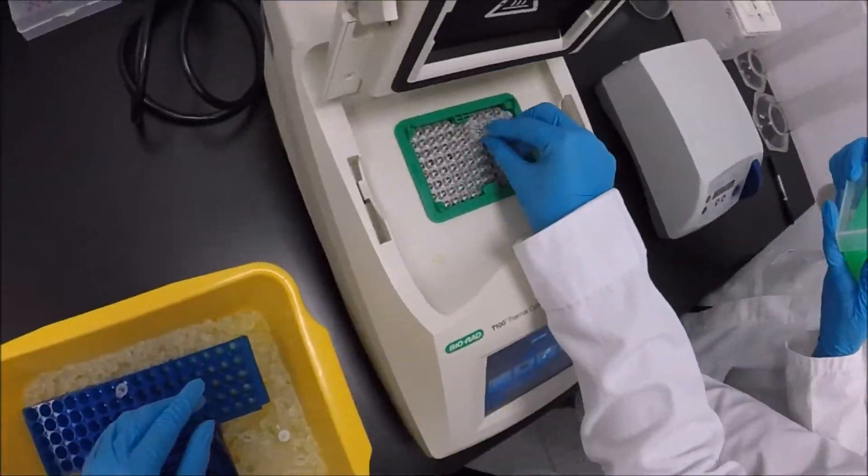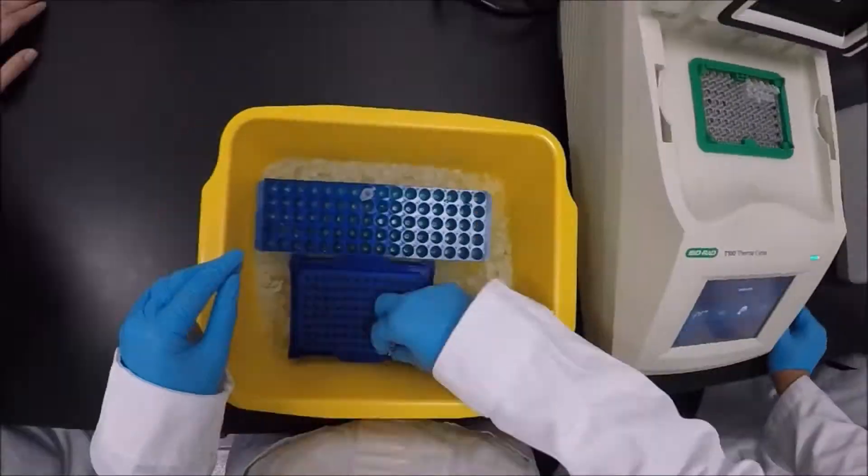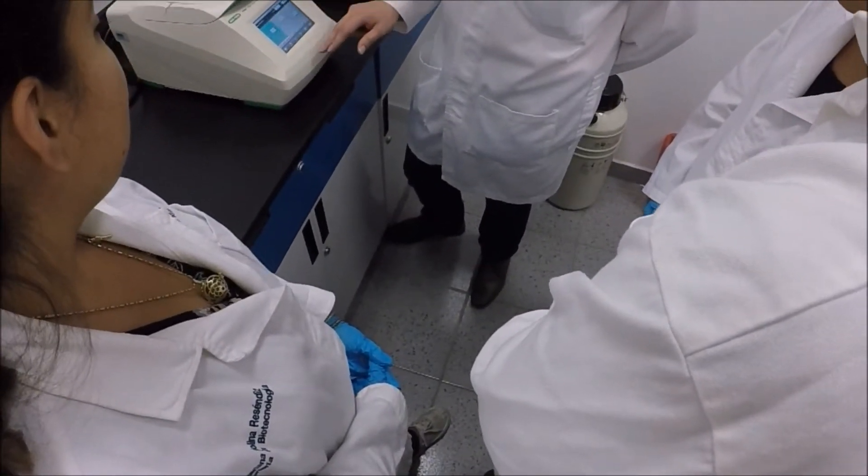The five tubes were placed on the thermocycler, arranged in alphabetical order. The thermocycler was set at 37 degrees Celsius for 30 minutes.